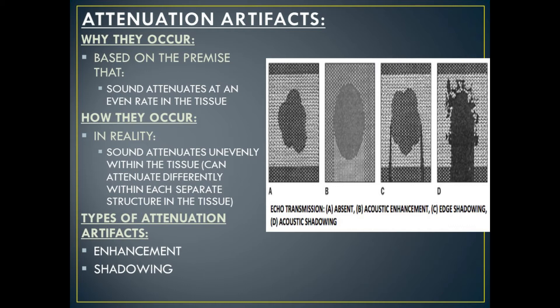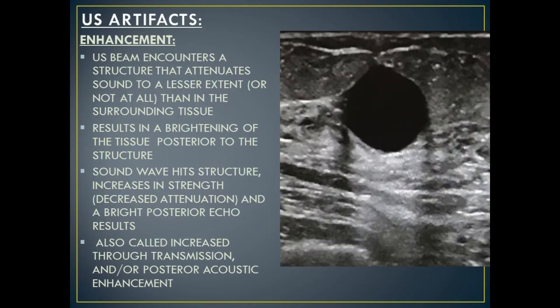Types of attenuation artifacts include enhancement and shadowing. Enhancement is brightness posterior to a mass, and this occurs when there is no attenuation or much less attenuation of the sound wave as it travels through a structure. The sound wave hits the structure, increases in strength — meaning decreased attenuation — and a bright echo posterior to the structure results. This is also known as increased through transmission or posterior acoustic enhancement. Enhancement can be helpful in characterizing masses in the breast, as cystic areas display enhancement, which can be a sign of a benign mass, though not always.